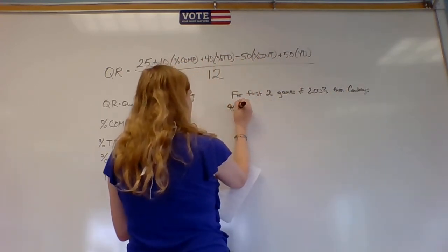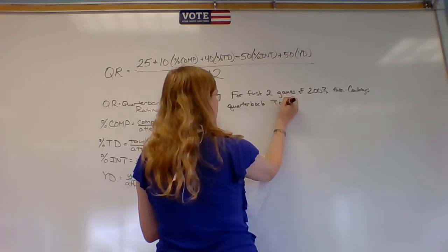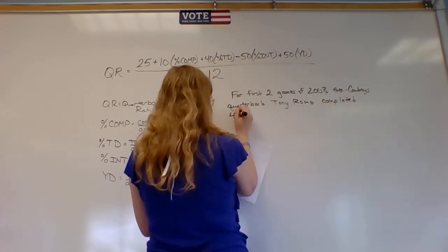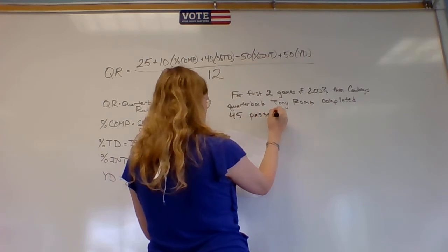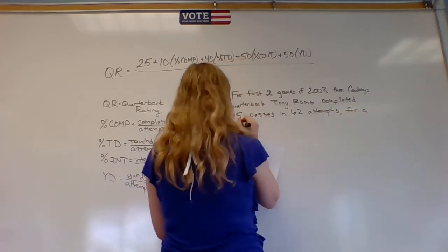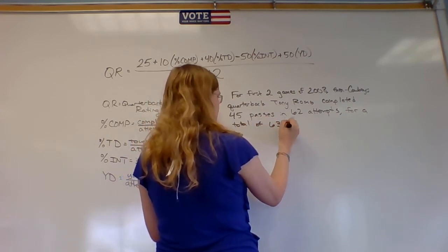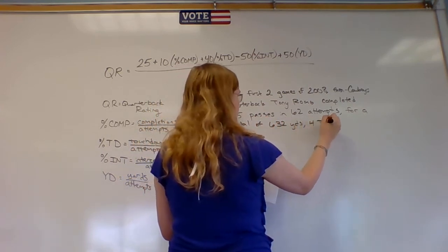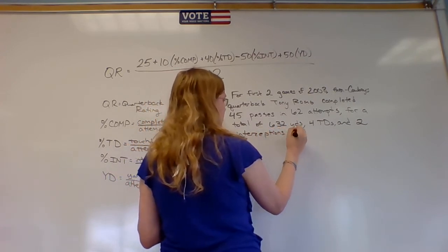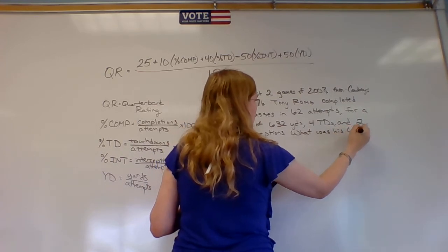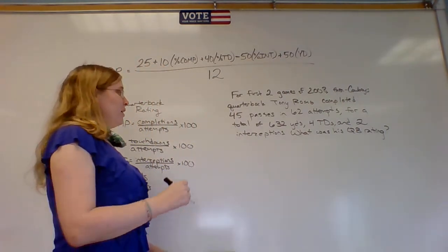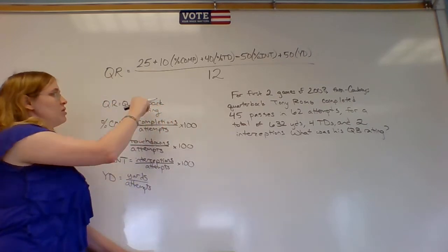Let's go all in with the examples. For the first two games of 2008, Cowboys quarterback Tony Romo completed 45 passes in 62 attempts for a total of 632 yards, four touchdowns, and two interceptions. What was his quarterback rating?